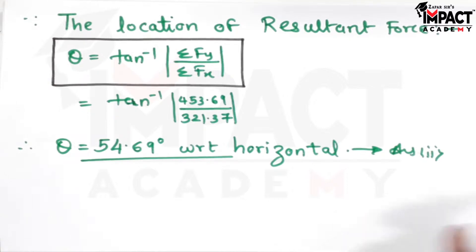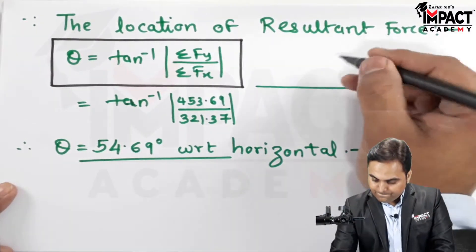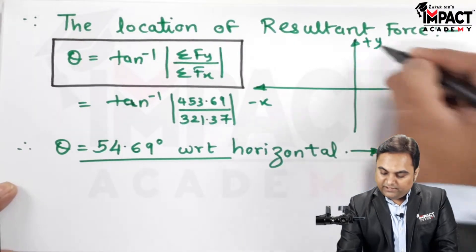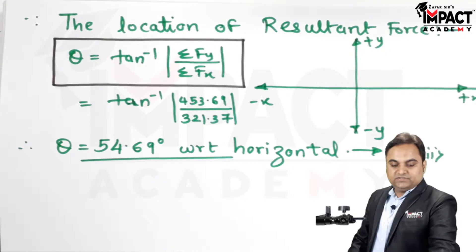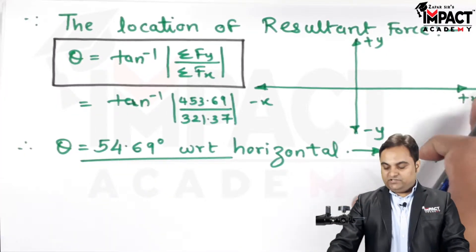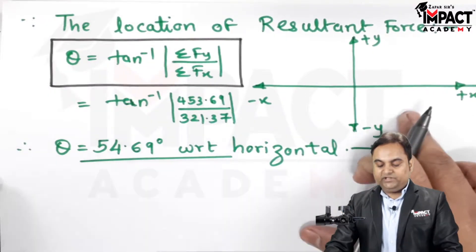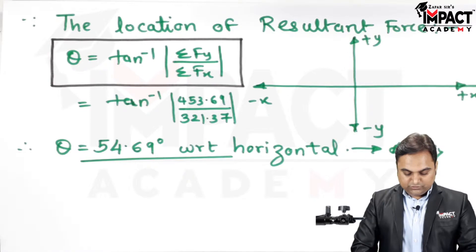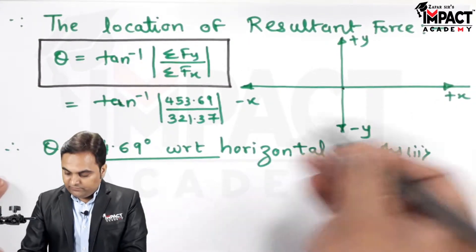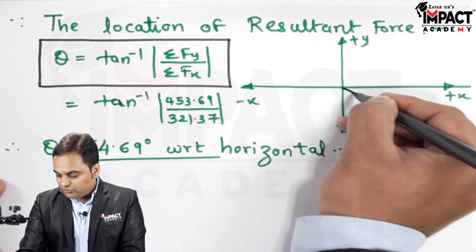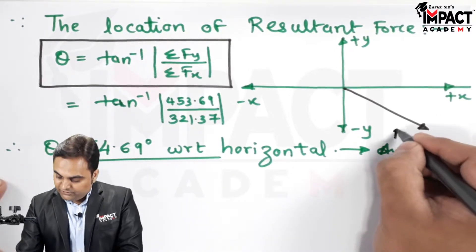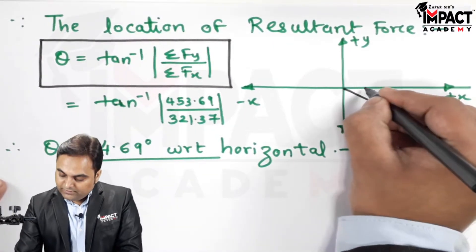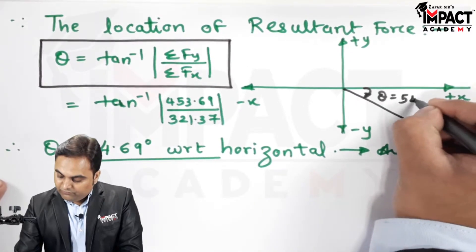That's the second answer. Looking at the resultant's location: since ΣFx is positive (rightward) and ΣFy is negative (downward), the resultant lies in the fourth quadrant. It is inclined at 54.69° with respect to the horizontal. The resultant force is 555.98 N at θ = 54.69°.